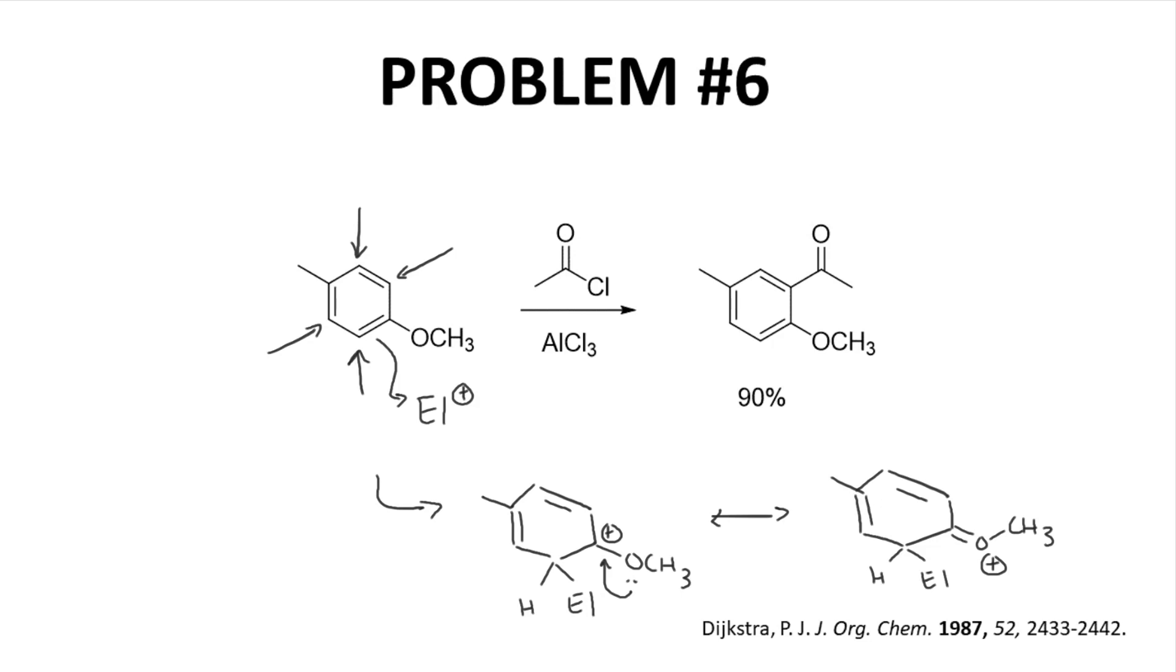While you might not like the O plus in the resonance form, this new resonance form does have a full octet, which is the number one rule of Lewis structures. This is better than any intermediate we can draw if we go ortho to the methyl. The stability of this intermediate from attack ortho to the methoxy group explains the observation of the product shown in high yield.